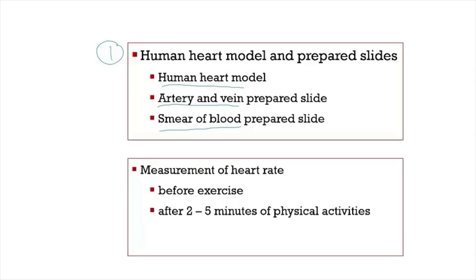The second part of this experiment is the measurement of heart rate. Heart rate can be measured by counting the pulse. Pulse is the rhythmic bulging of the artery when blood is pushed through it. To measure the heart rate before exercise, students must relax and sit comfortably. Count the pulse at the wrist for 15 seconds, then multiply the amount by 4 to get the number of heartbeats per minute.